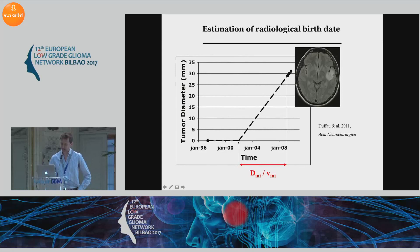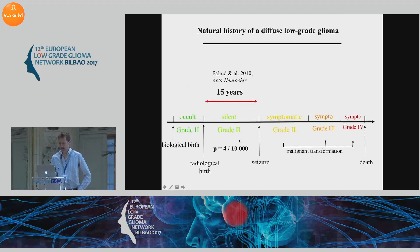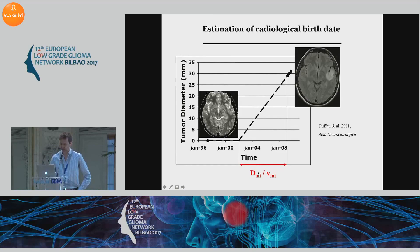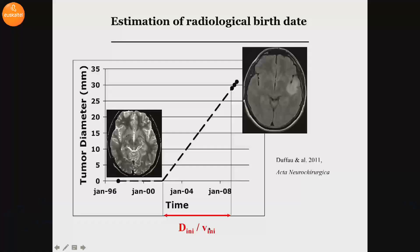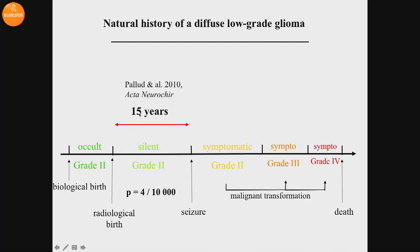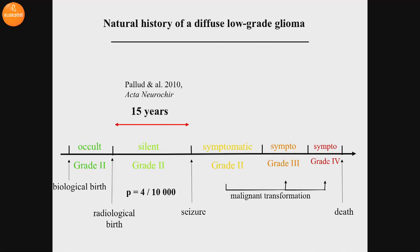We also know that if we know the growth rate of the glioma, we can extrapolate backward in time and estimate the date of the radiological birth. If we apply this formula — dividing the initial diameter by the initial speed of the glioma — we can estimate that the silent period is about 15 years. So it's quite a long time window that allows us to detect a silent glioma, which is a good thing for screening.